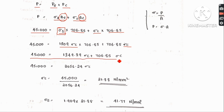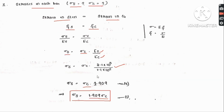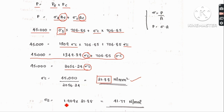Taking the first equation and substituting sigma_s equal to 1.909 sigma_c into the load equation, we solve for sigma_c. The calculation gives sigma_c equal to 21.88 N/mm². Then substituting back, sigma_s equals 1.909 times 21.88, giving sigma_s equal to 41.77 N/mm². These are the stresses in the composite bar. The strains are equal in each section, confirming our total load and individual load conditions.